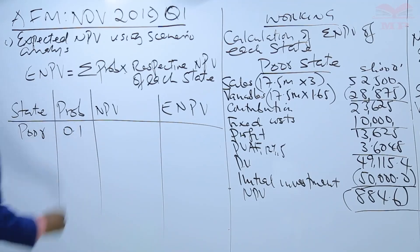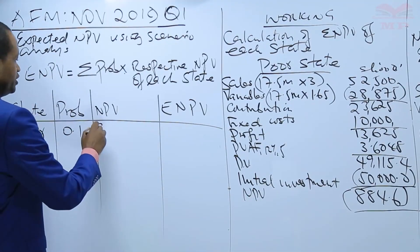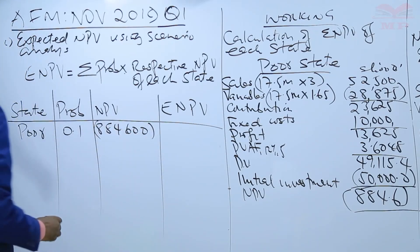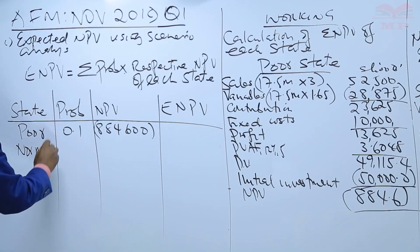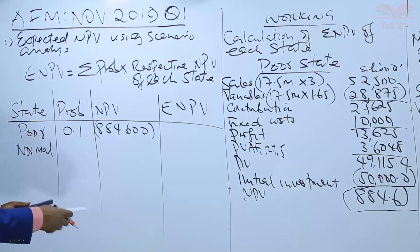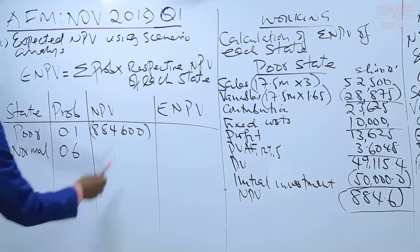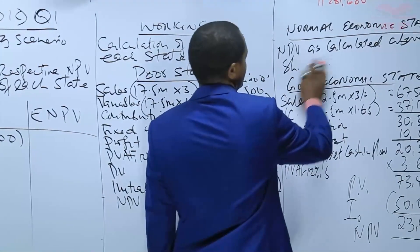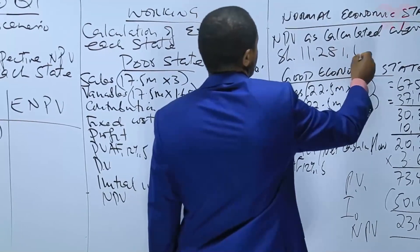For the poor state, probability is 0.1 and the NPV is negative 884,600. For the normal state, probability is 0.6 and the NPV is 11,281,600 — as calculated in part one, not 17 million as initially mentioned, but 11,281,600.